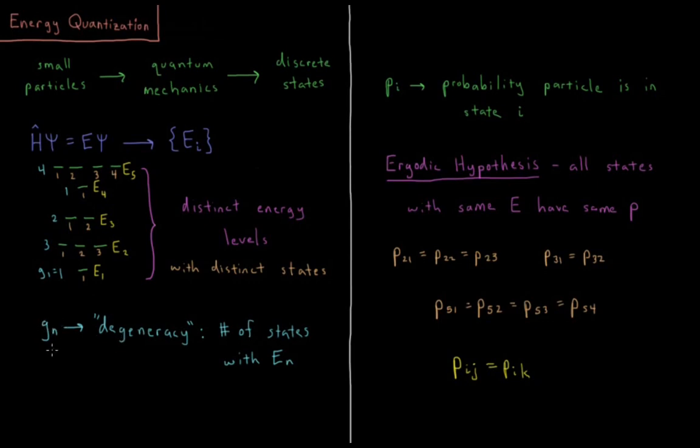usually specified by G sub n. And that is the number of distinct states in that energy level. So the number of states with energy E sub n. So we have all these different states here. In order to get any kind of physical property from all these states, what we need to know is what is the average value of that property.